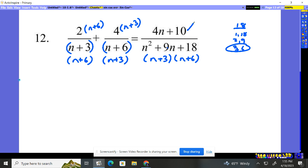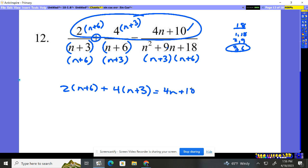Once all the denominators are the same, you can just set everything in the numerator on the left equal to what's in the right numerator. So we have 2 times the n plus 6 plus 4 times the n plus 3 must equal a 4n plus 10.